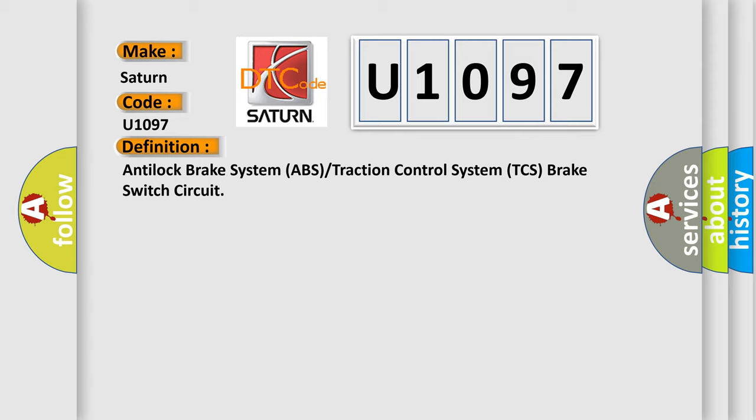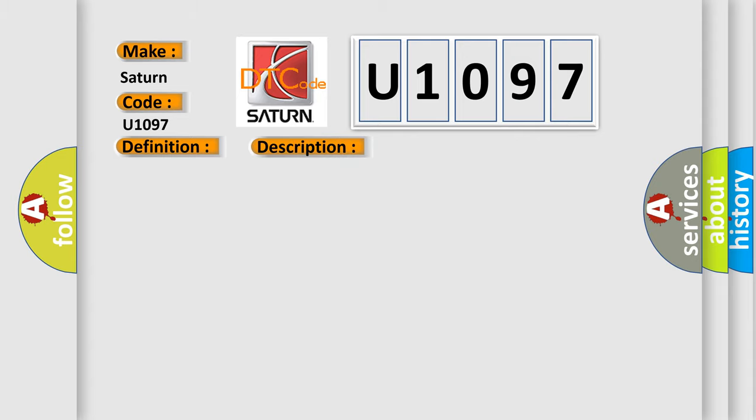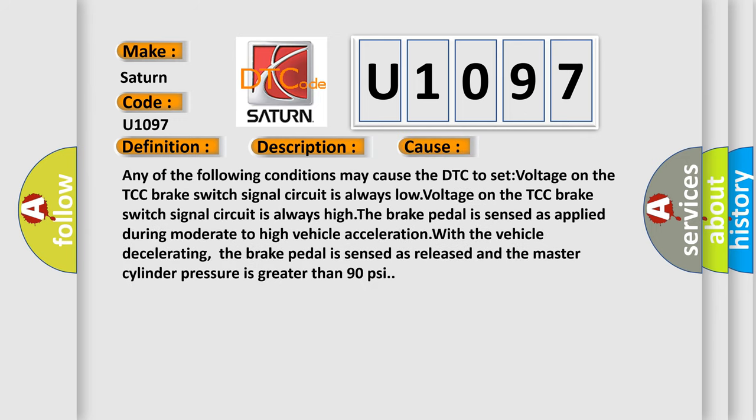Here is a short description of this DTC code. The ignition is on and the ignition voltage is greater than 8 volts. The vehicle speed is greater than 16 kilometers per hour (10 miles per hour). Any of the following conditions may cause the DTC to set: voltage on the TCC Brake Switch Signal circuit is always low; voltage on the TCC Brake Switch Signal circuit is always high; the brake pedal is sensed as applied during moderate to high vehicle acceleration; or with the vehicle decelerating, the brake pedal is sensed as released and the master cylinder pressure is greater than 90 psi.